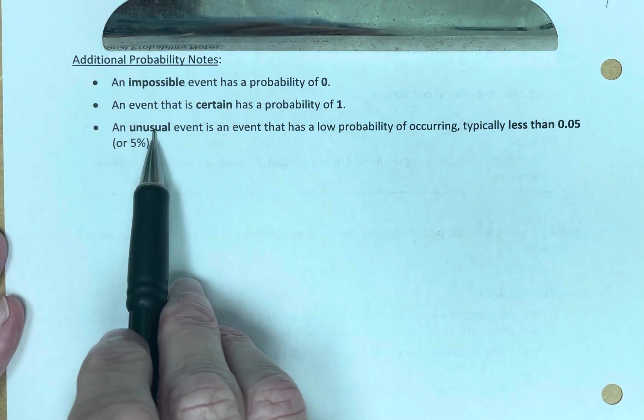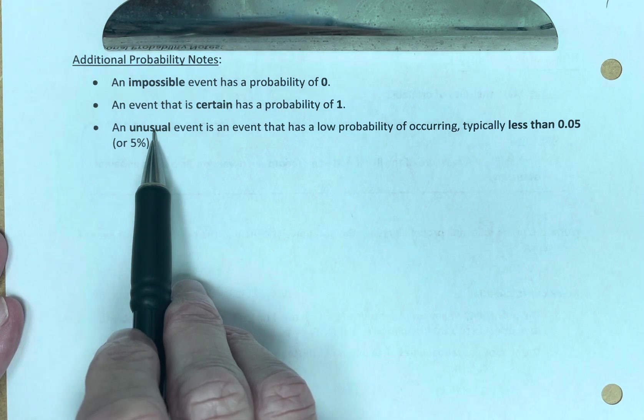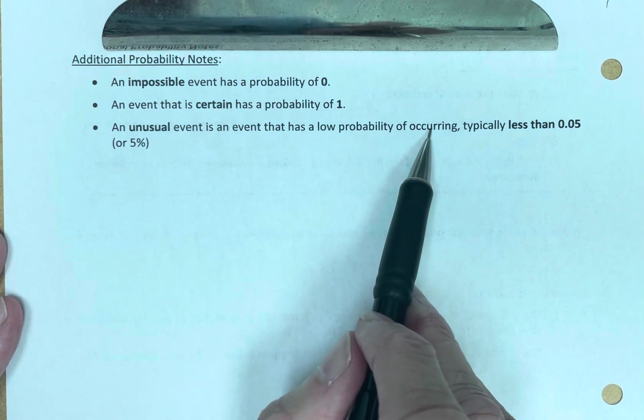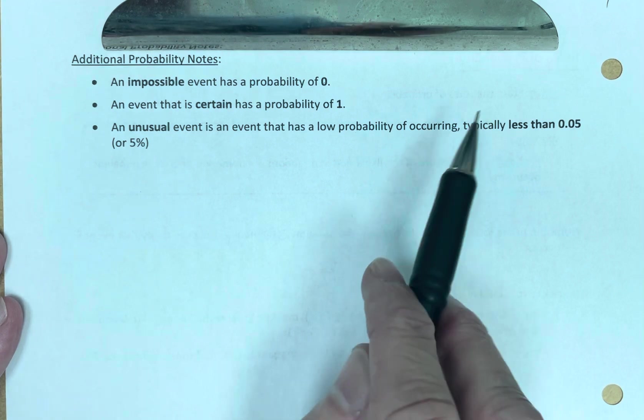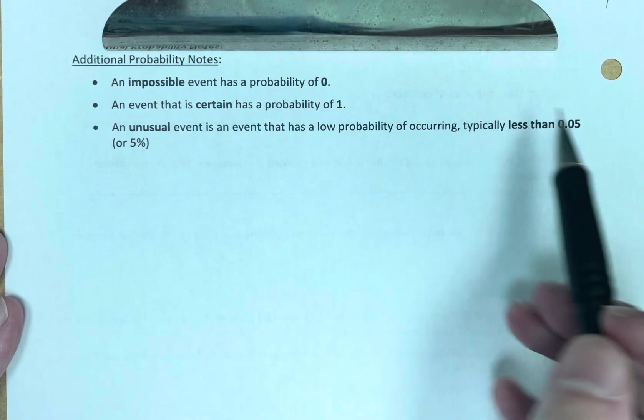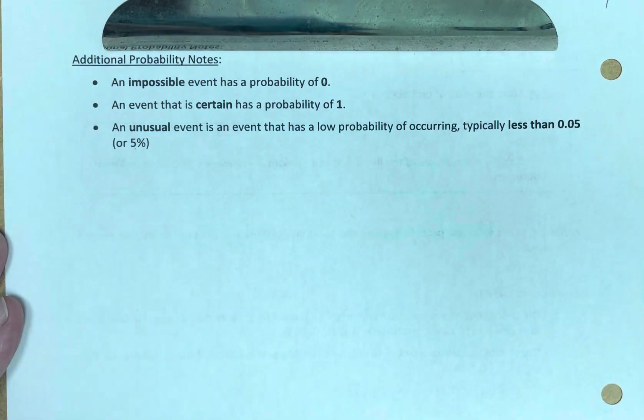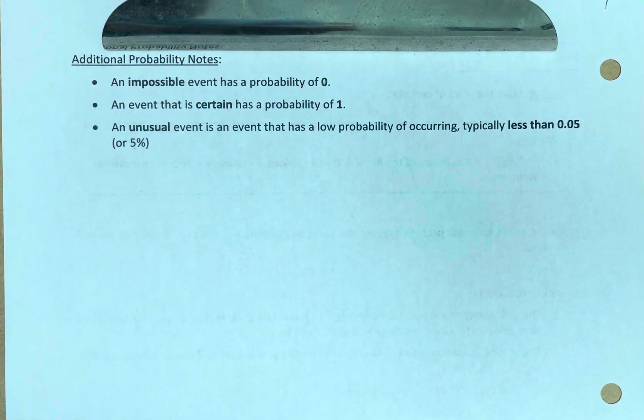And then finally, we define an unusual event as an event that has a low probability of occurring. Typically what that means is that the probability of that event occurring is less than 0.05, which is the same as 5%. So that tells us we have an unusual event.